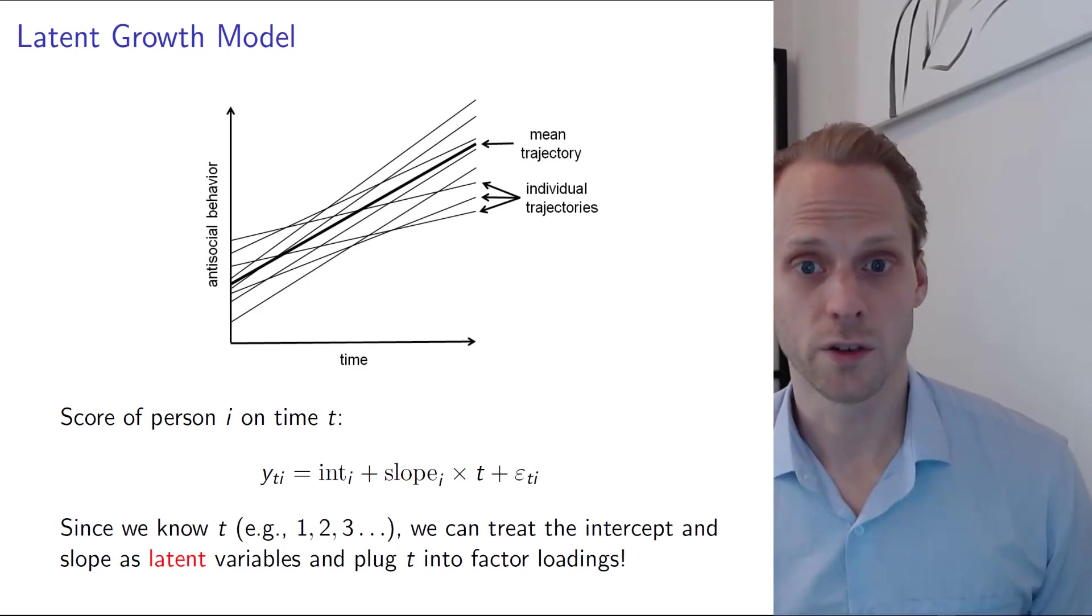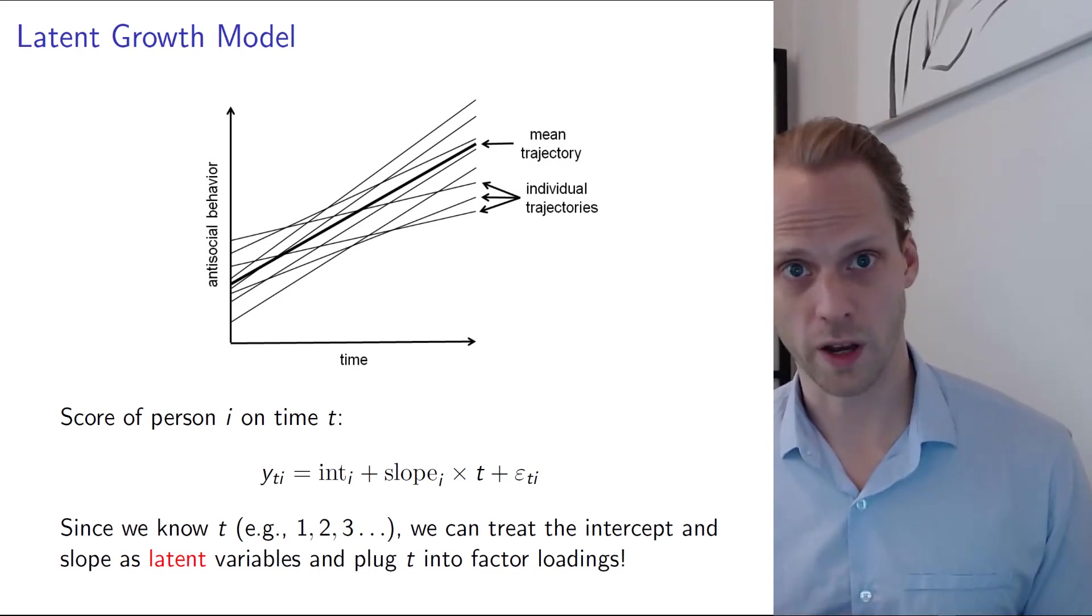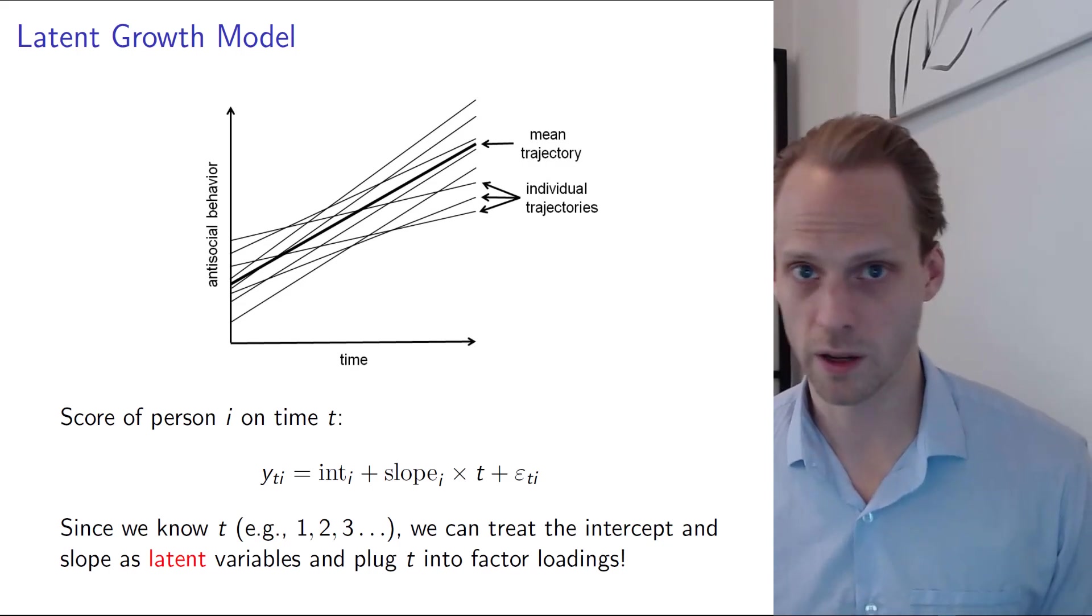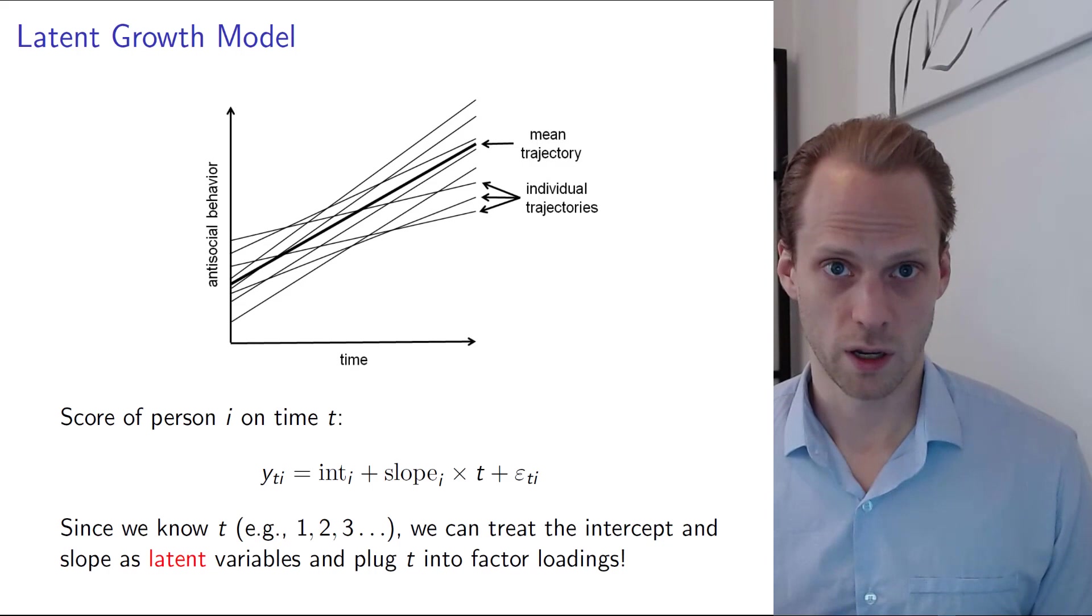Now in a latent growth model, we measure a lot of people on some time points, like four or five time points, not hundreds like ESM data, but some fixed time points that we can link them on.